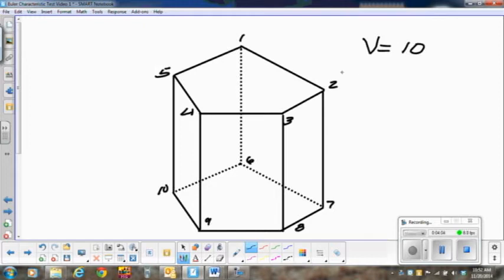Next let's do the number of edges, this time I'll do that in blue. There is one, two, three, four, five around the top. Let's go to the bottom: six, seven, eight, nine, ten. And there are the five vertical edges, so that will make eleven, twelve, thirteen, fourteen, fifteen. So our number of edges is equal to fifteen.